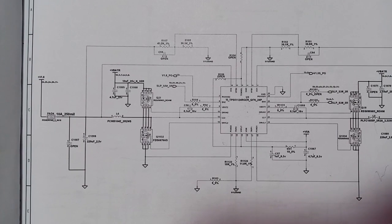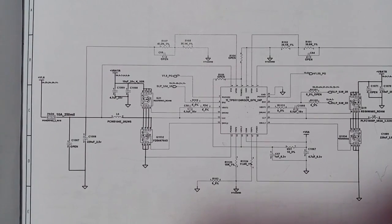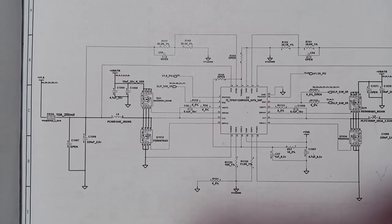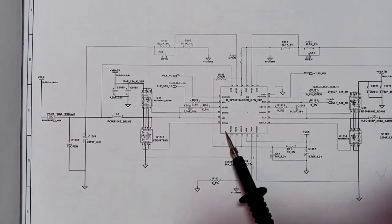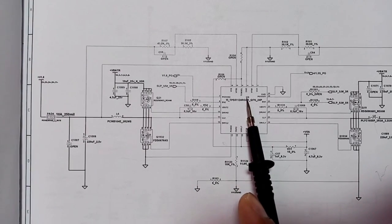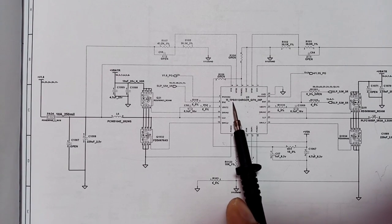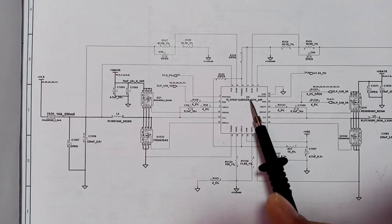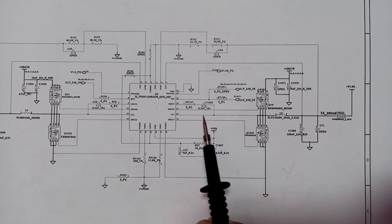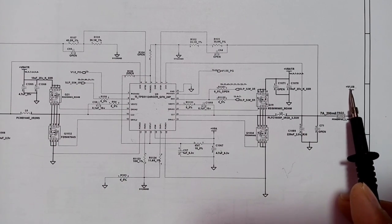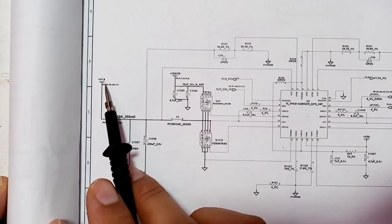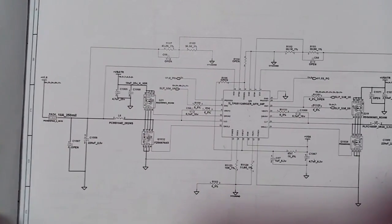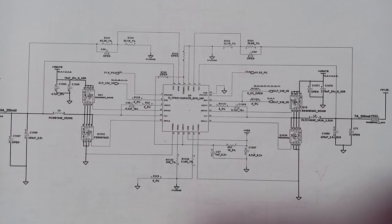In this lecture, we're going to see the 1.5 volt and 1.8 volt circuit. You will always find in any circuit a control IC. Here we have the control IC, its reference in the motherboard is U9, and its part number or model is TPS51124. This IC basically controls two channels: the 1.5 volt channel and the 1.8 volt channel. This is basically standard between all channels.